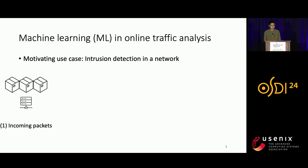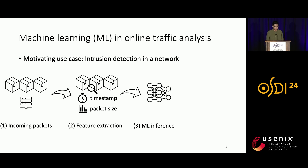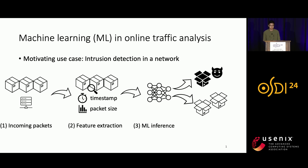After we have these packets, we extract features like timestamps and packet size from incoming packets. We feed these features into a machine learning model for inference. This model is trained to recognize feature patterns in malicious packets, classifying each packet as either malicious or benign. Based on this classification, we drop malicious packets and keep the benign ones.